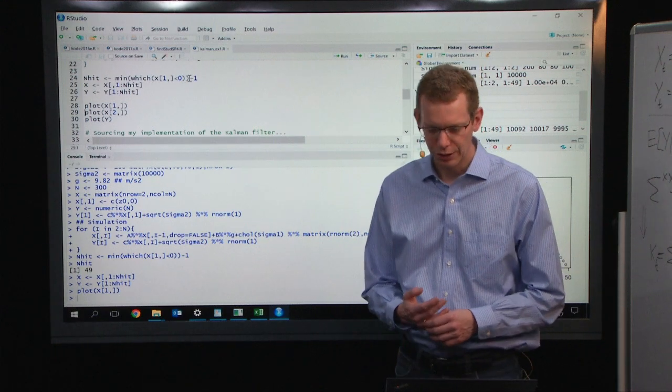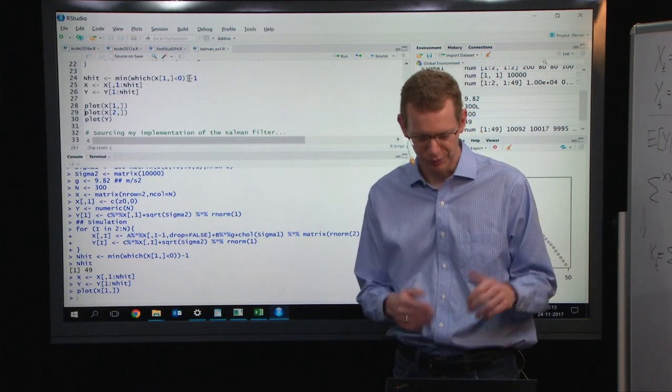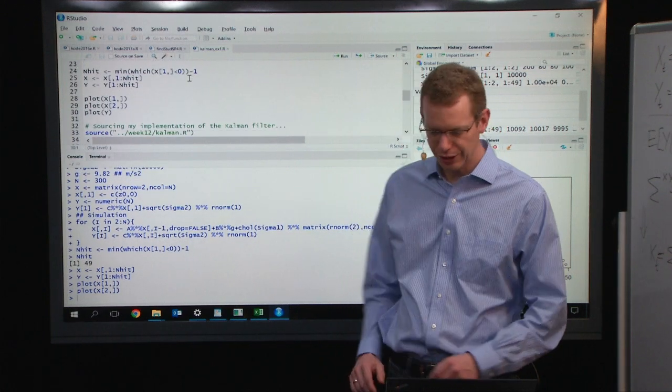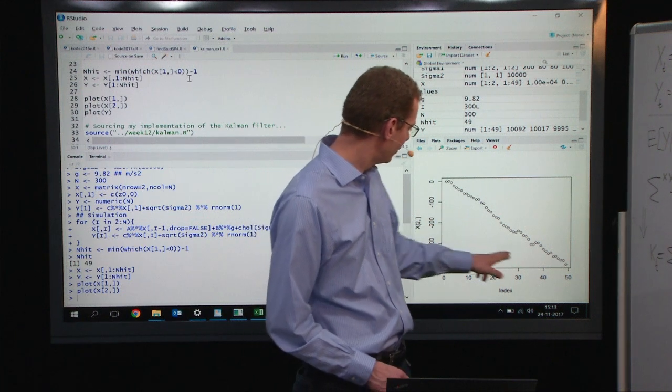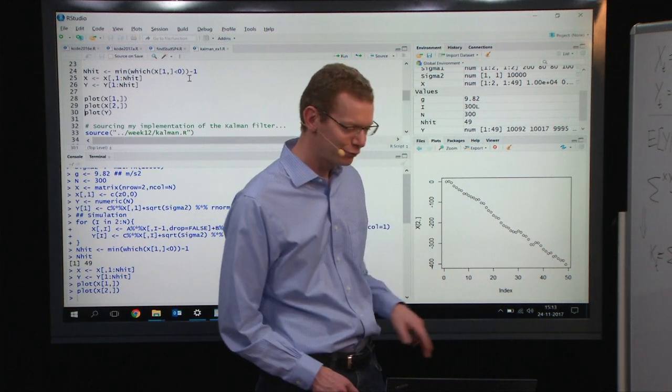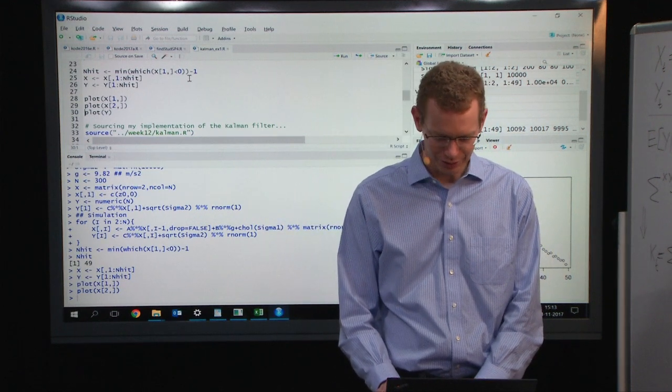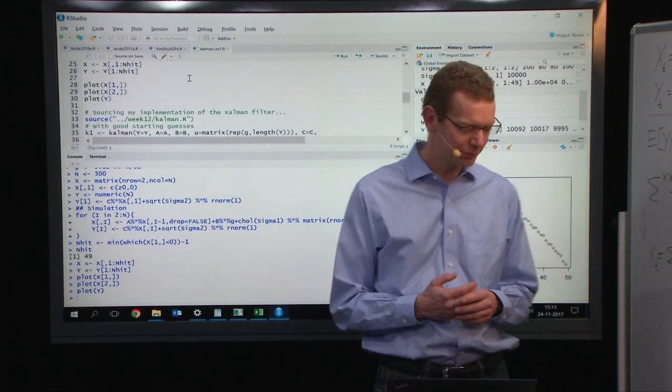This is the first state, namely the position and the velocity. It does reach up to almost negative 400 meters per second within this time slot. And if we plot the observations, that is what we should expect to get in a real-time case.